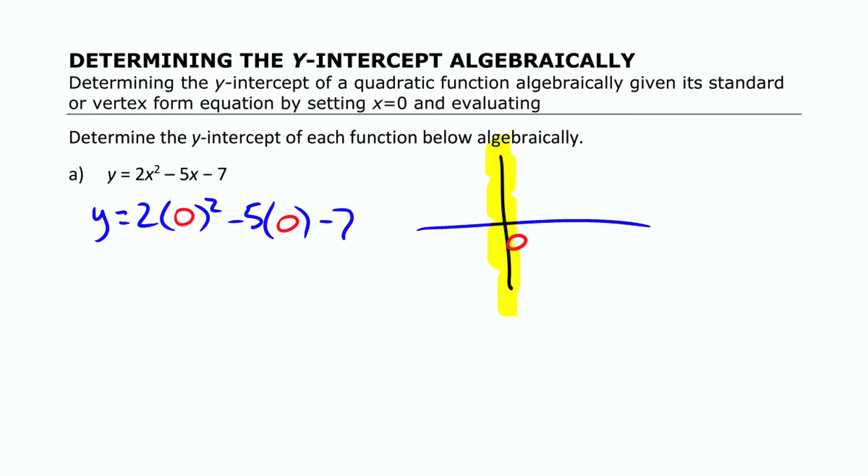Now the nice thing about this is 2 times 0 squared is 2 times 0, which is 0. And minus 5 times 0 is just 0. And then minus 7 on the end. So actually, this term turns to 0. This term turns to 0.